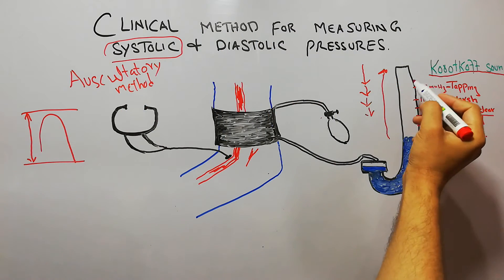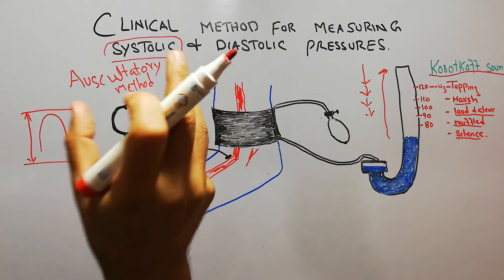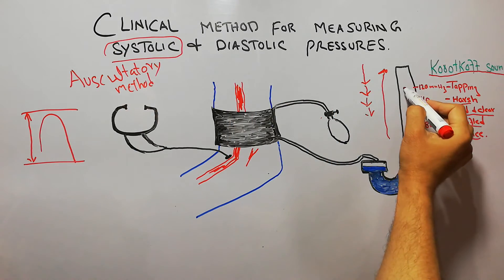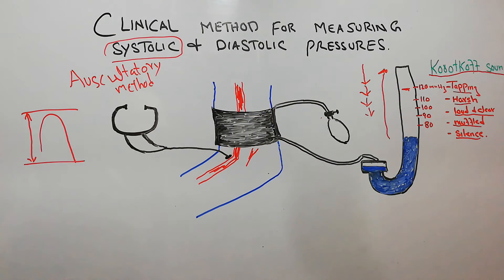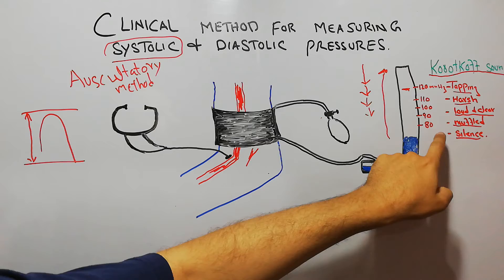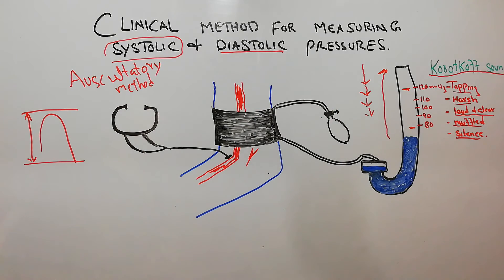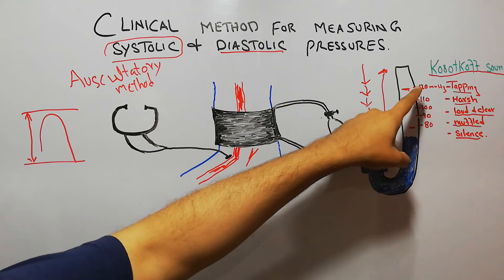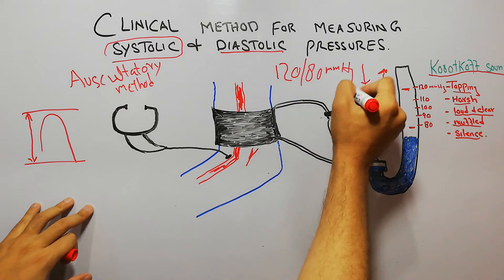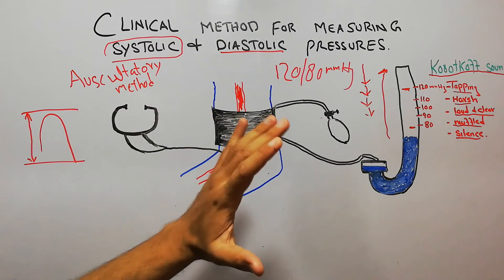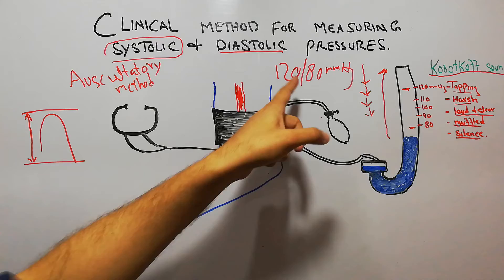Initially tapping in character, then harsh, then loud and clear, then muffled, and finally they disappear. The point at which these sounds start — when the doctor is first able to listen to the tapping sounds — is the systolic pressure. The point at which the sounds disappear is the diastolic pressure. Normally this is 120/80 mmHg, where 120 is systolic and 80 is diastolic, in normal human beings.